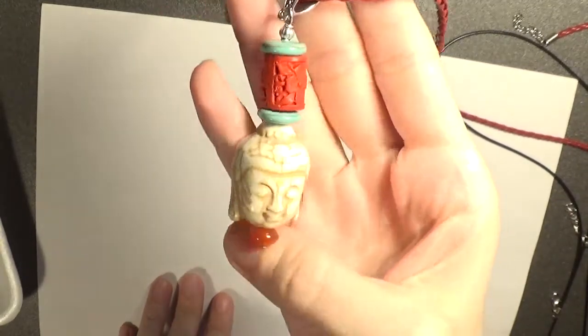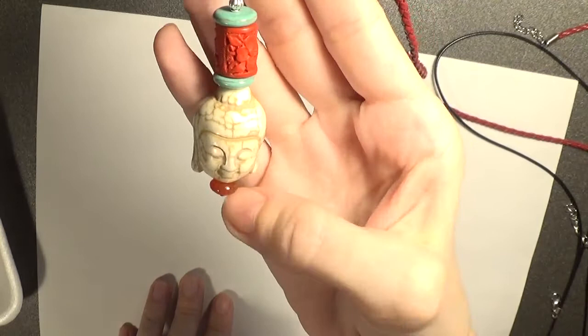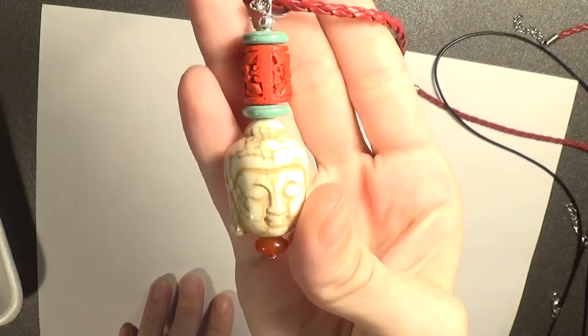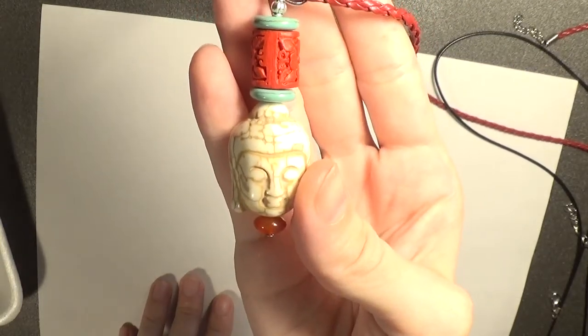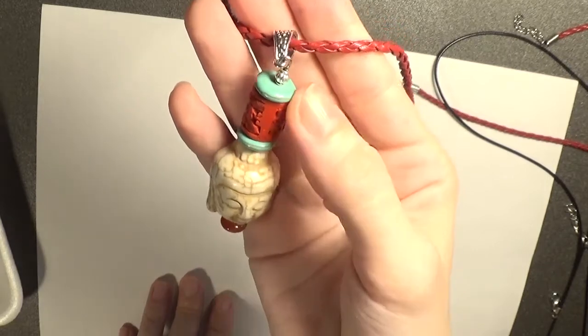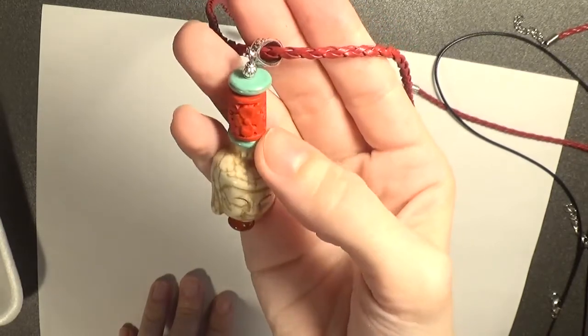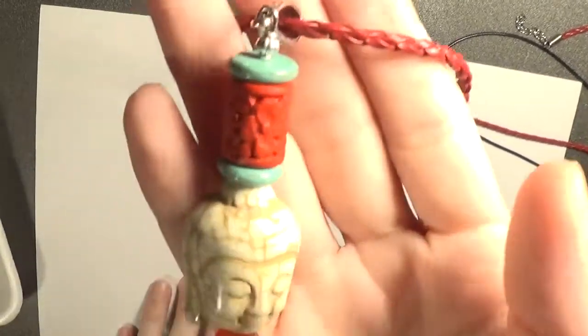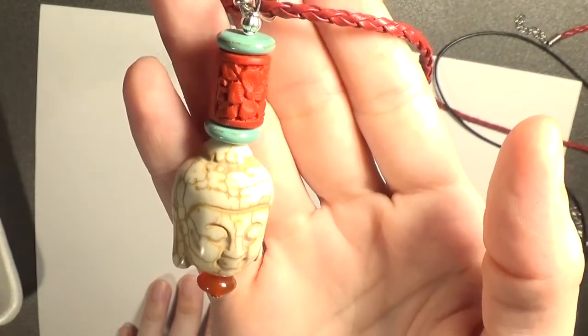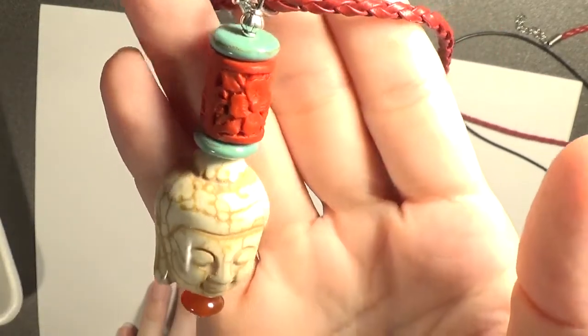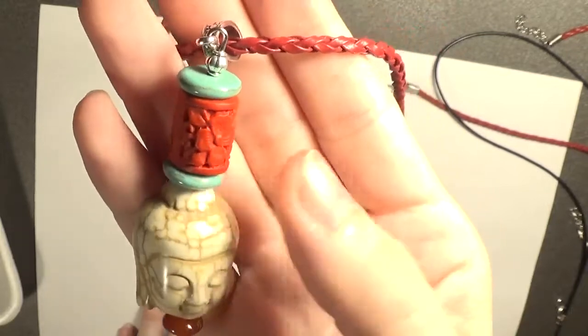The pendant is older. It has this amber bead, this Buddha head made of bone, the two turquoise beads, and these cinnabar beads. This cinnabar bead with a flower - it is sculpted with a flower.